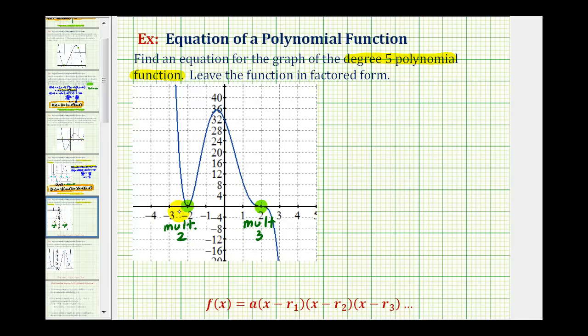So this root or zero has multiplicity two. This has multiplicity three. So we have five real rational zeros. And because we have these zeros of the function, we can find the equation of the function in factored form using the form given here below.